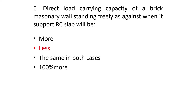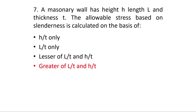Question 7: A masonry wall has height H, length L, and thickness T. The allowable stress based on slenderness is calculated on the basis of the greater of L/T and H/T. The slenderness ratio of a wall is defined as the ratio of effective height to effective thickness. For a masonry wall, effective height may be replaced by effective length, so the answer is the greater of L/T and H/T.